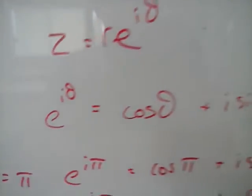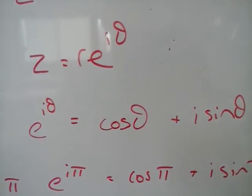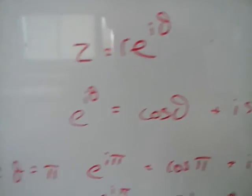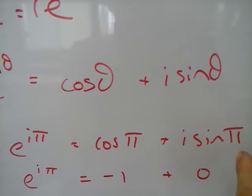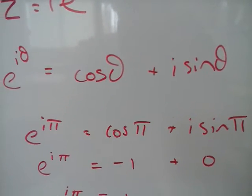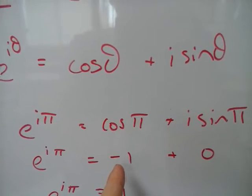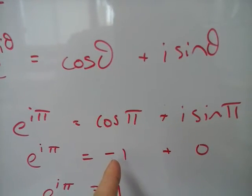Next I can say if theta equals pi, I can substitute pi here, here, and here, and then work out each part. So e to the pi i, the cos of pi is minus one, the sine of pi is zero.